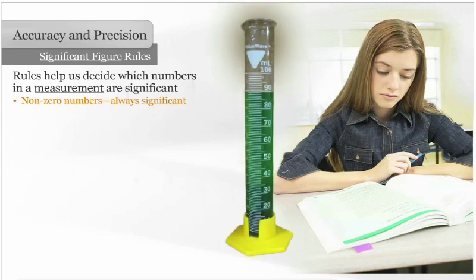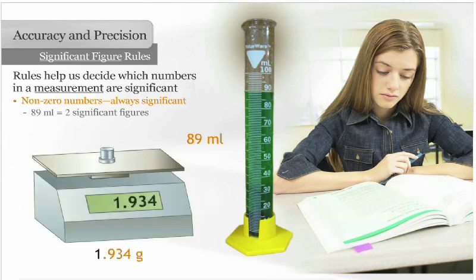Non-zero numbers are always significant. 89 milliliters has two significant figures. 1.934 grams has four significant figures.